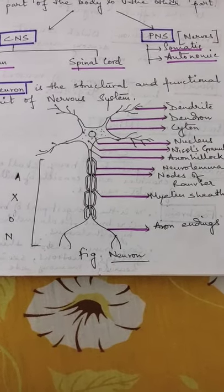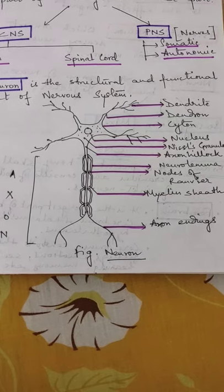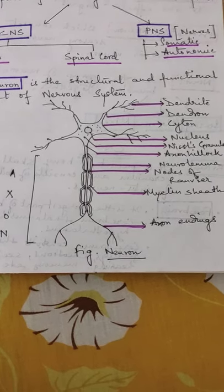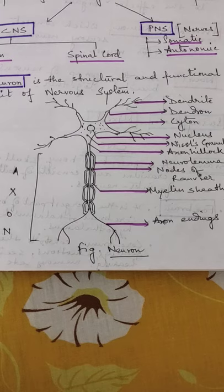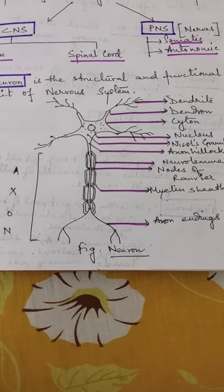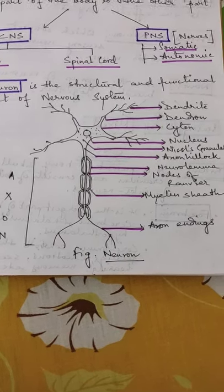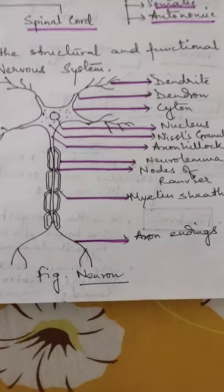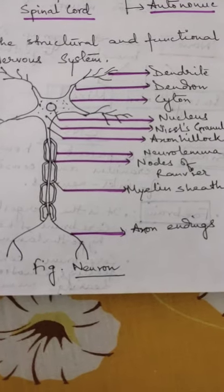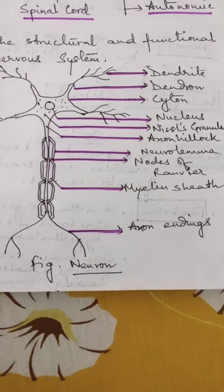As you can see, this neuron has many parts: dendrite, dendron, cyton is the head portion. Within that we have nucleus and the granular things are known as Nissl granules.